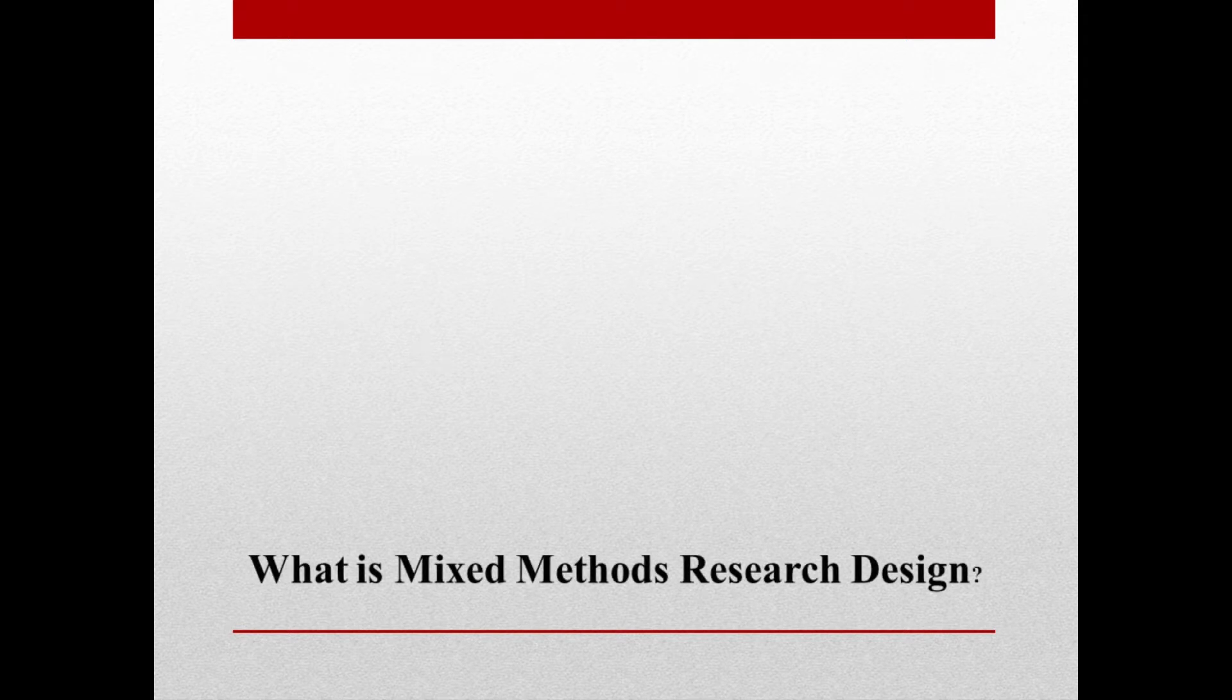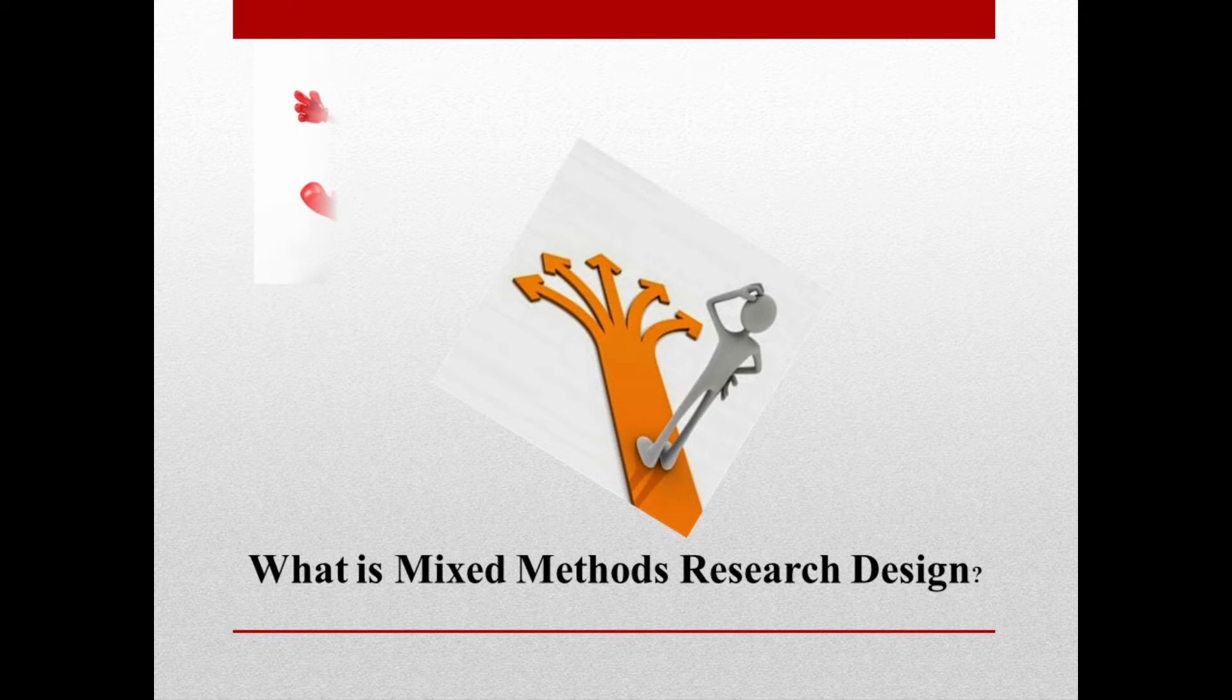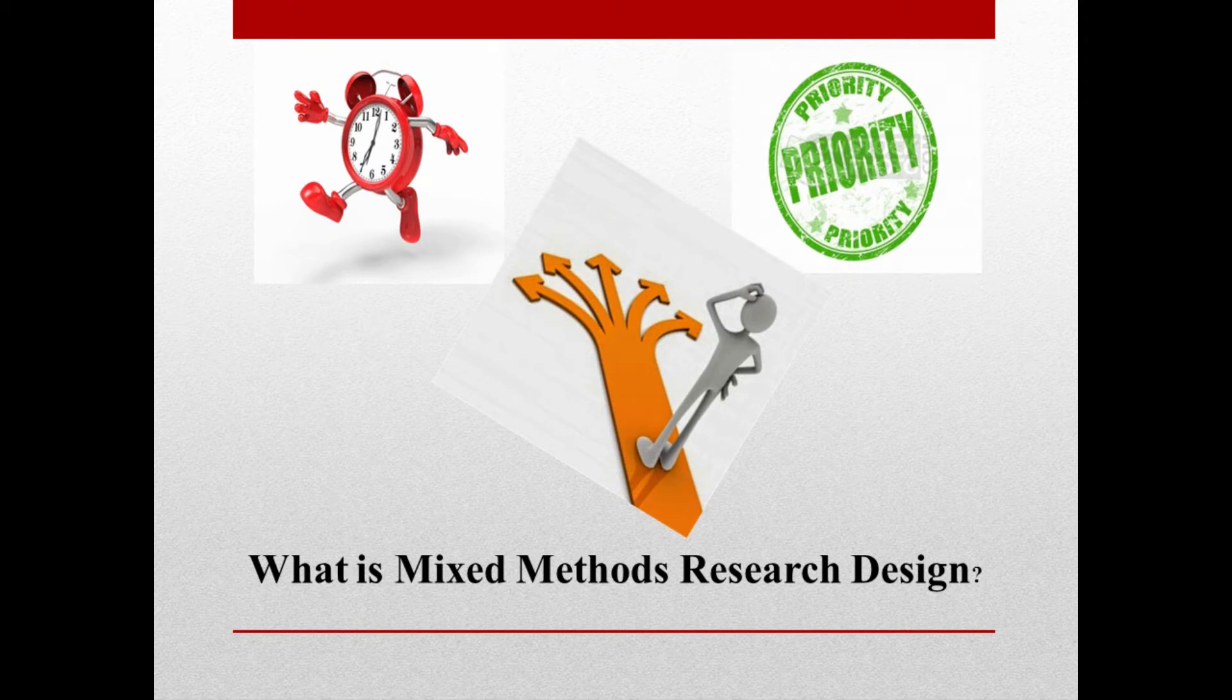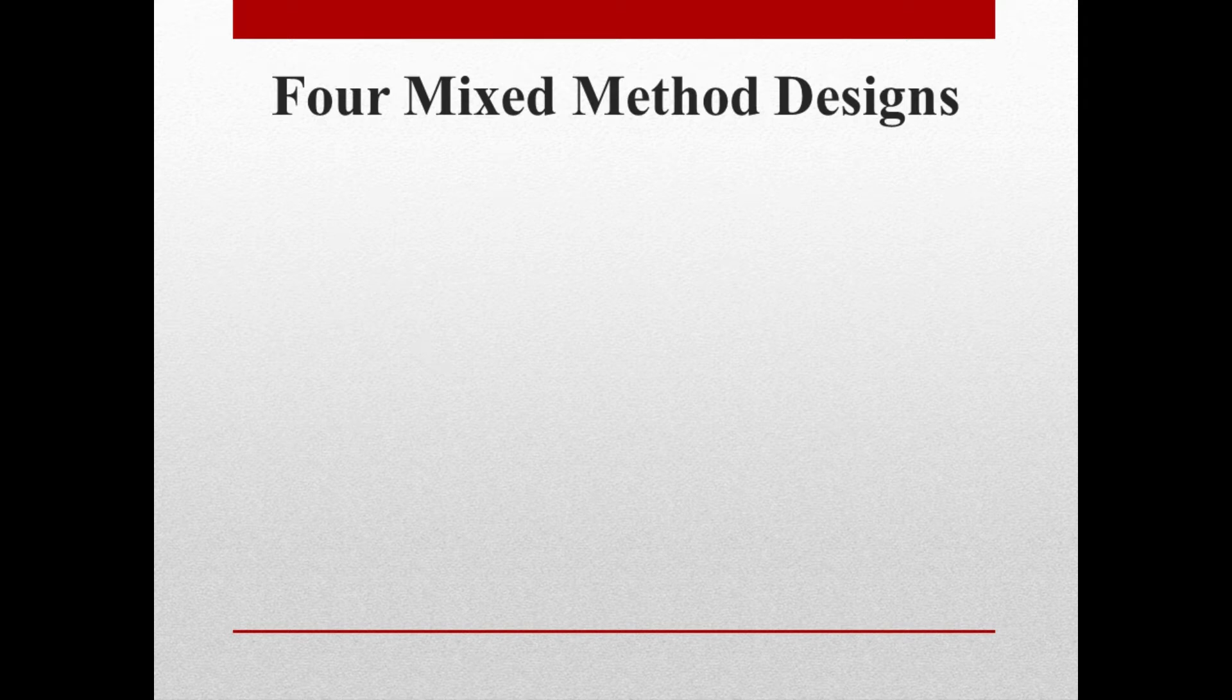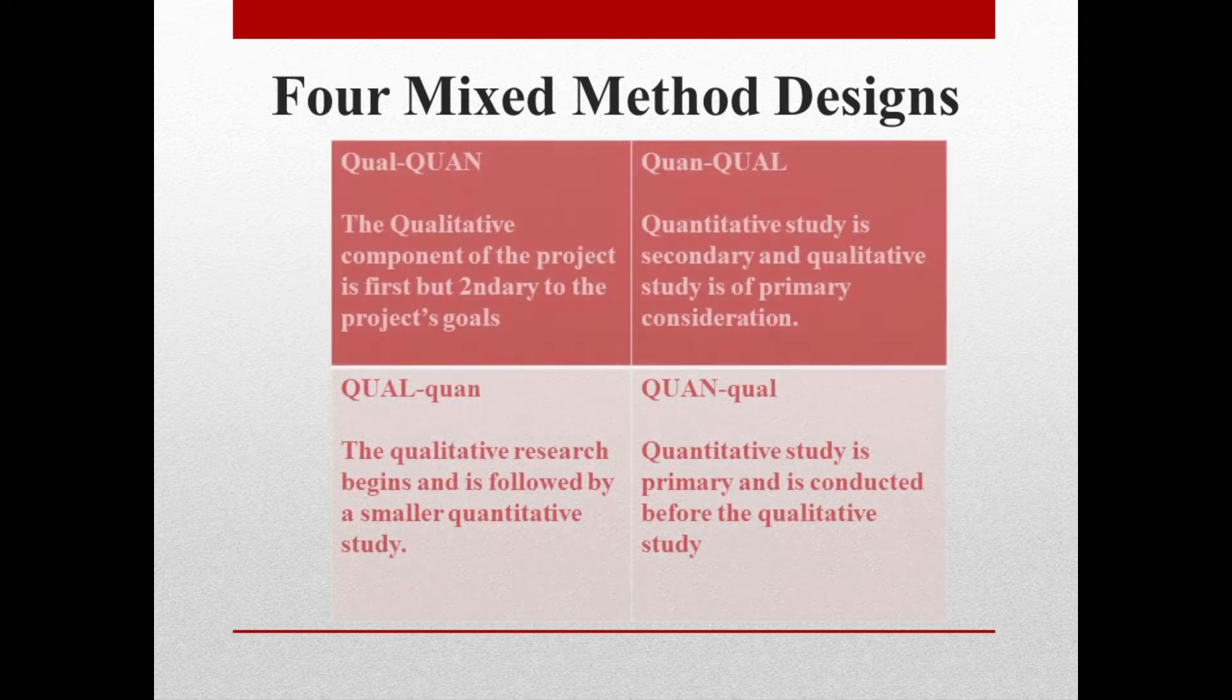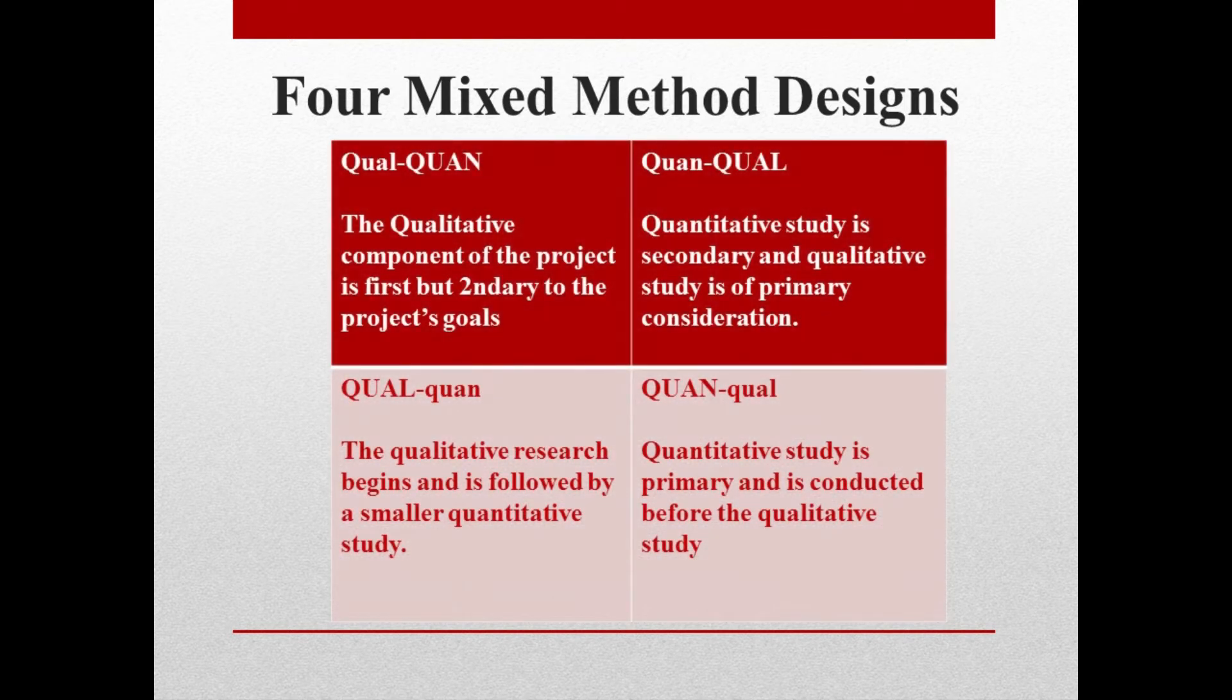What is a mixed method research design? Decisions have to be made regarding timing, which means which component comes first, and prioritizing, which means which component is dominant. In 1998, David Morgan noted that how the researchers answered the questions of timing and prioritizing will provide four possible mixed methods designs.